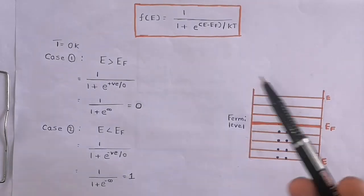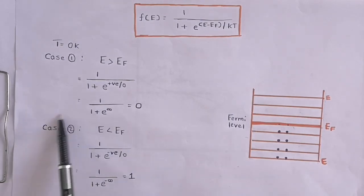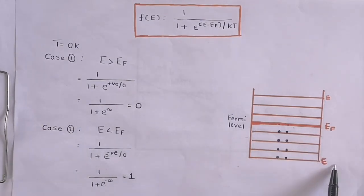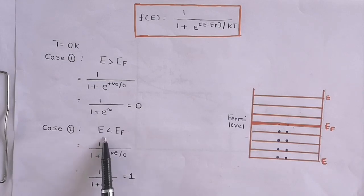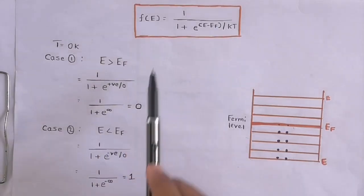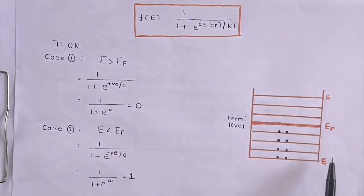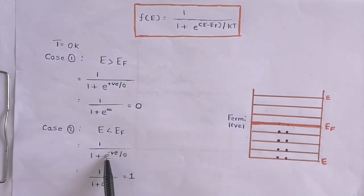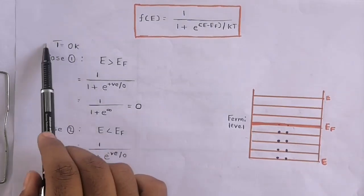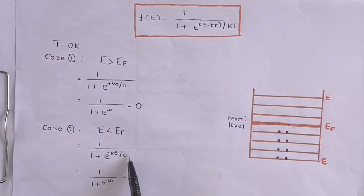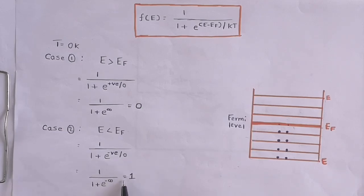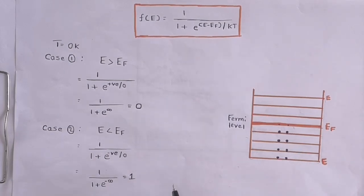Case 2: if the energy level is below the Fermi energy (E < E_F), then f(E) = 1 / (1 + e^((E − E_F) / kT)). Since E − E_F is negative and kT = 0, this becomes 1 / (1 + e^(−∞)) = 1 / (1 + 0) = 1, meaning the probability of finding an electron below the Fermi level is 100%.